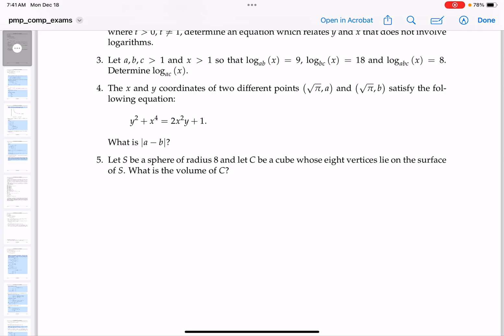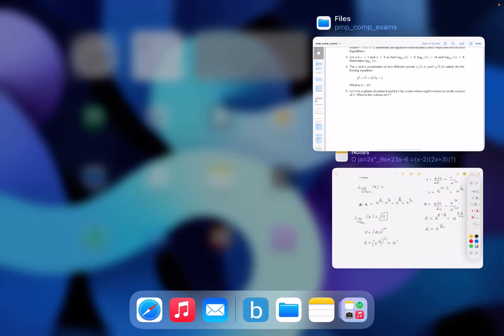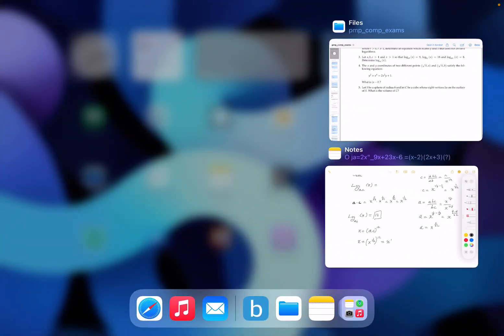Okay, we're on problem number four. The x and y coordinates of two different points satisfy the following equation. What's the absolute difference between a and b? That's the absolute value by the way. Let's take a look and go back to the whiteboard.